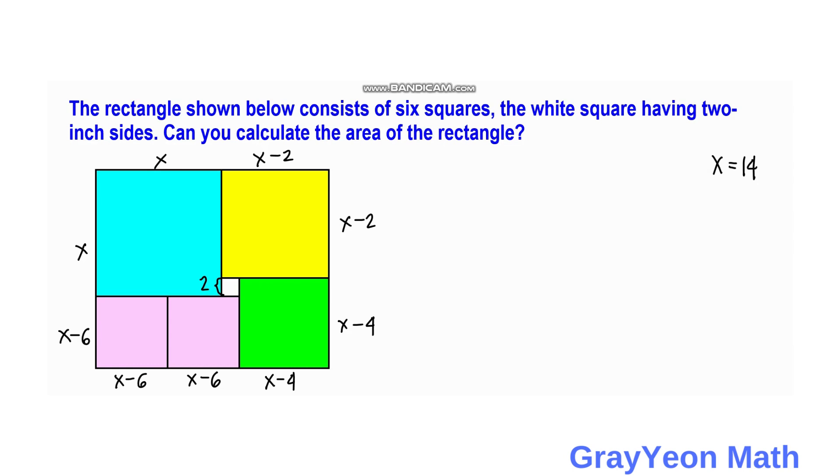Okay, so next thing that we have to do is we need to use the value of 14 and put it in an equation that mentions the area of this rectangle. So area is equal to the length of this rectangle times the width. The length is actually x plus x minus two times x plus x minus six.